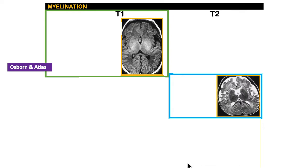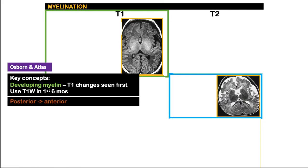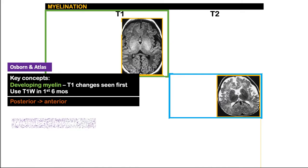For the first six months, we use T1, and beyond that, we use T2. Developing myelin shows T1 changes first, and T2 comes later — therefore we use T1 for the first six months. Another rule to remember is that the progression of myelination goes from posterior to anterior, bringing us to the myelination milestones.